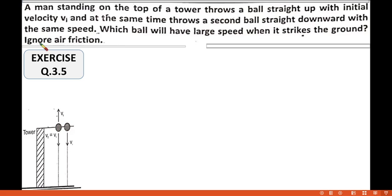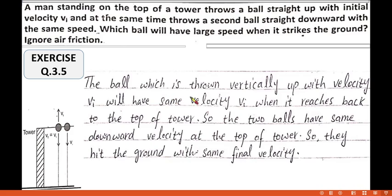If we ignore air friction, two bodies will get the same velocities in the absence of air. So we can say that the ball which is thrown vertically up with velocity vi will have same velocity vi when it reaches back to the top of the tower.